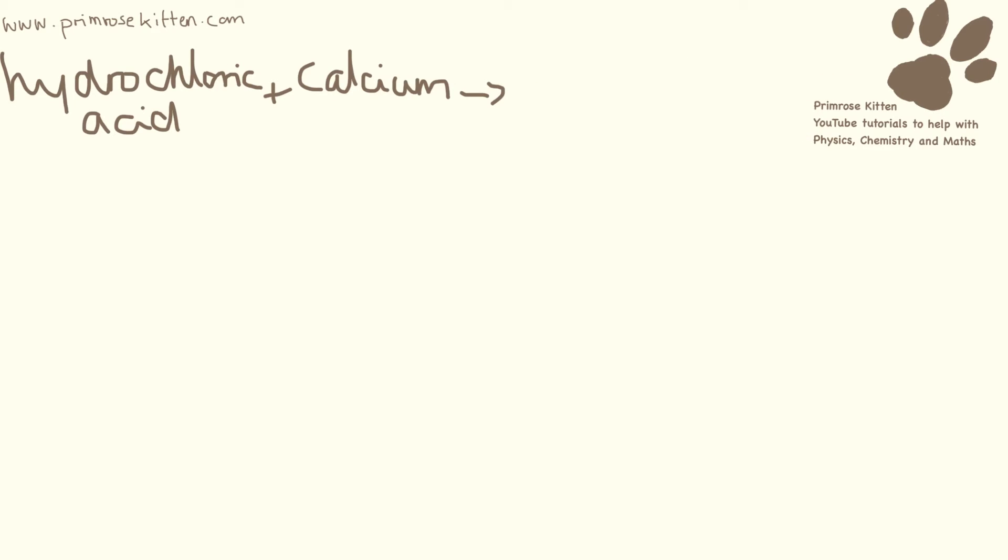Hydrochloric acid and calcium will be calcium. That's the metal. Because it's hydrochloric acid, it will be chloride as our salt. And because we just have the metal, we're also going to get hydrogen produced.